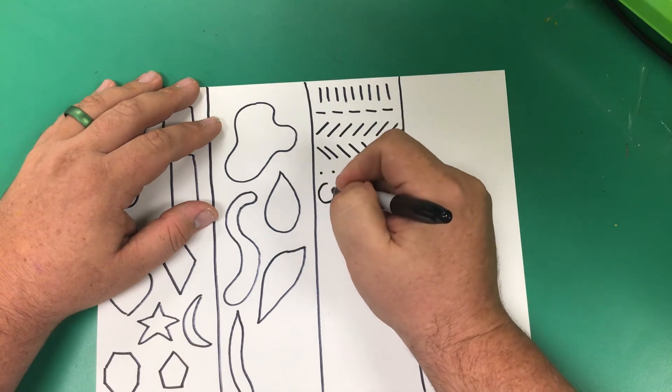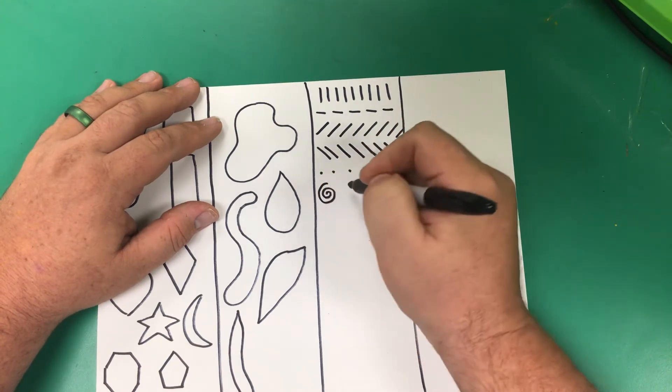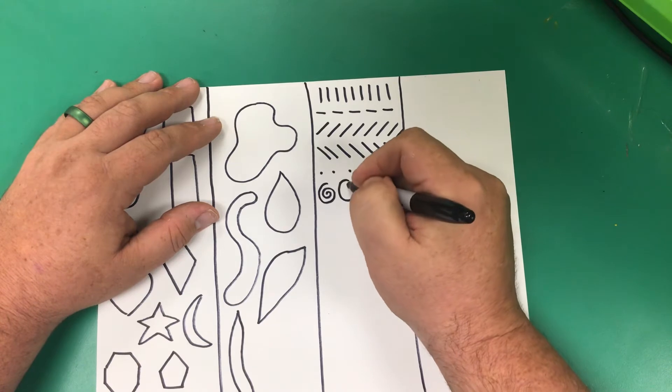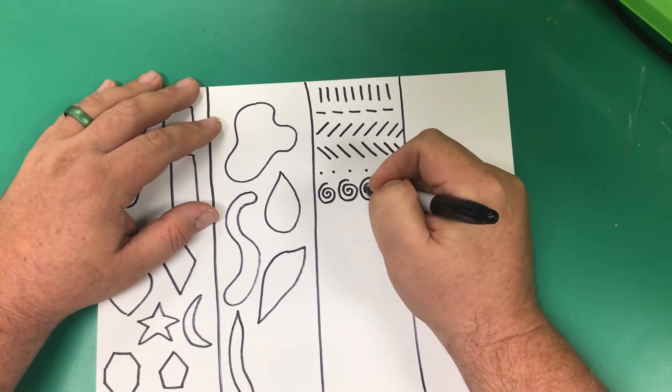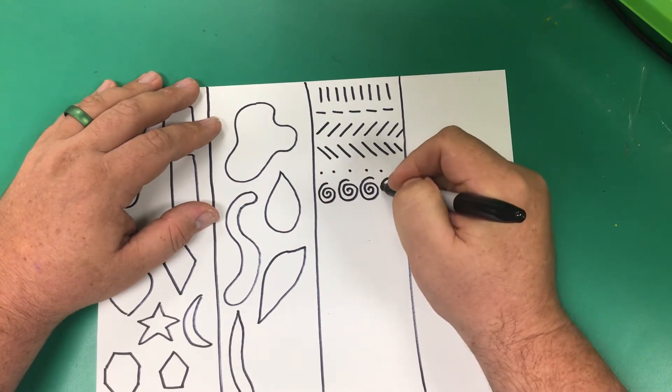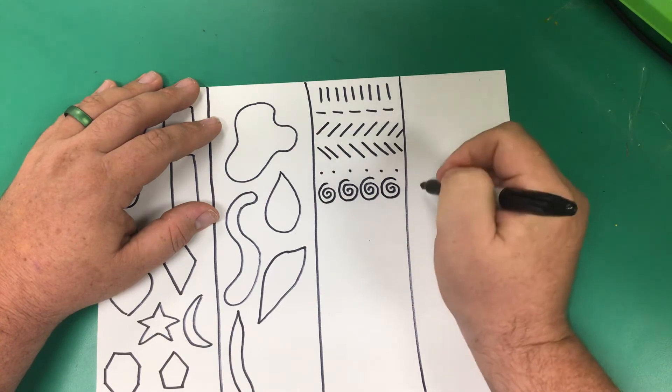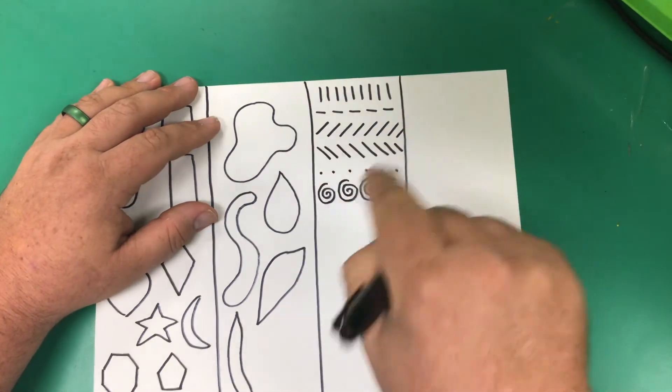After that, spiral. Now a spiral is like a cinnamon roll or a snail shell, or if you've ever seen the movie Moana, it's the heart of Tahiti. The stone has a spiral on it.